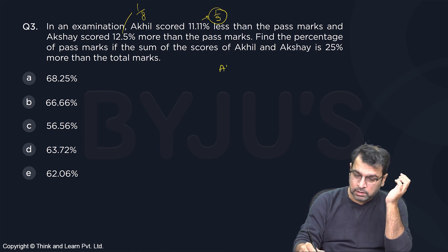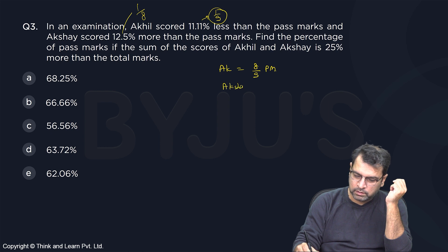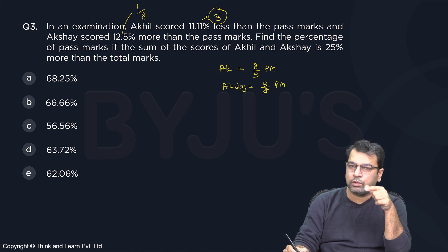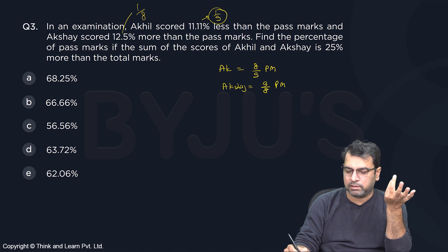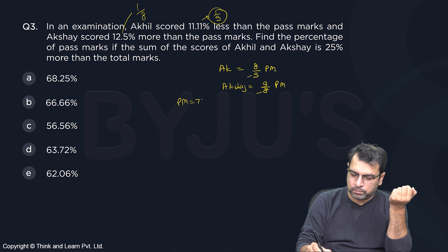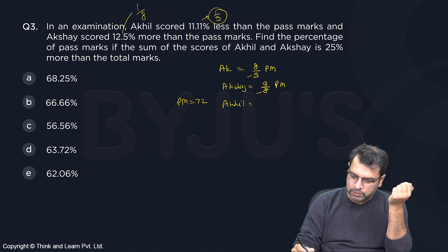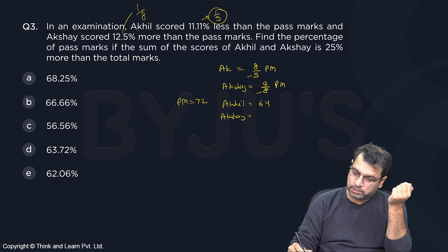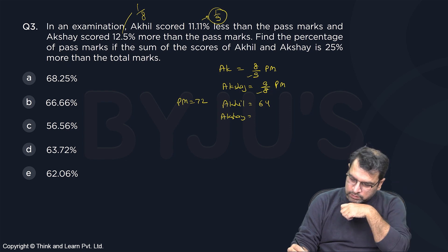So Akhil is 8/9 of pass marks and Akshay is 9/8 of pass marks. It's always better to assume pass marks as a multiple of 8 and 9. So if we assume pass marks is 72, then Akhil's score is 8/9 of 72, which is 64. Akshay scored 9/8 of 72, which gives 81.